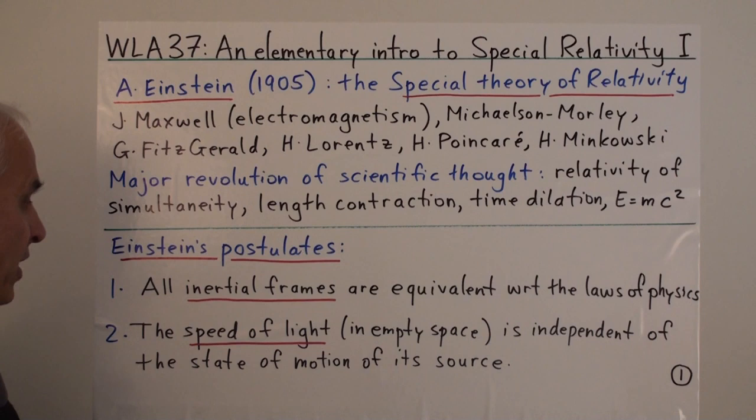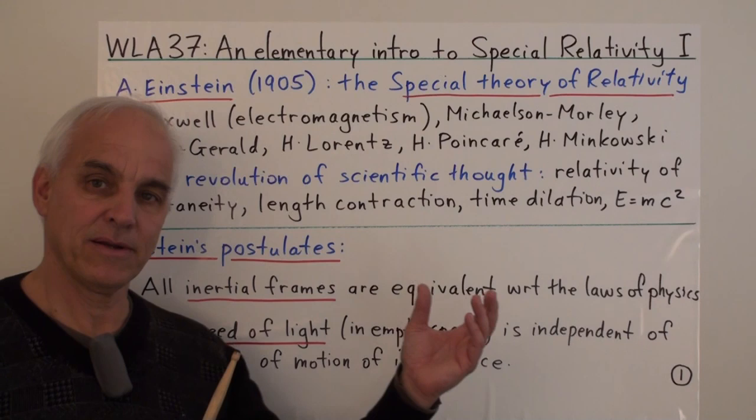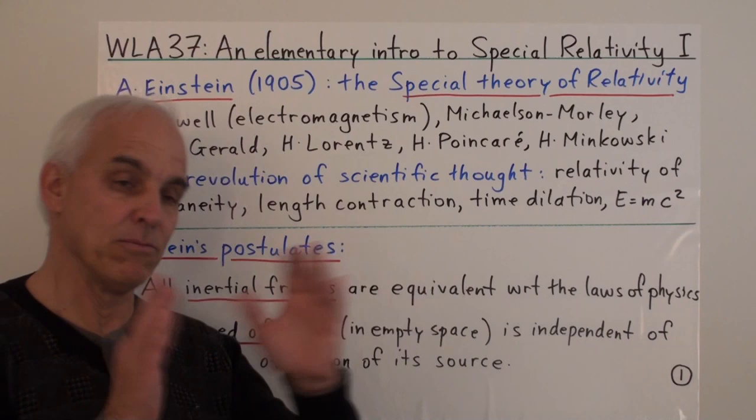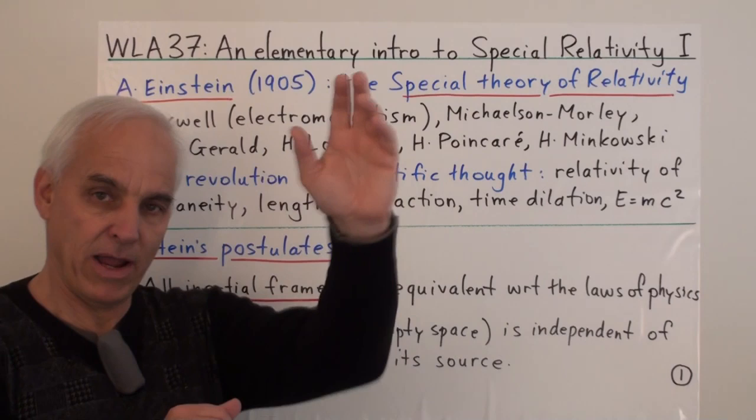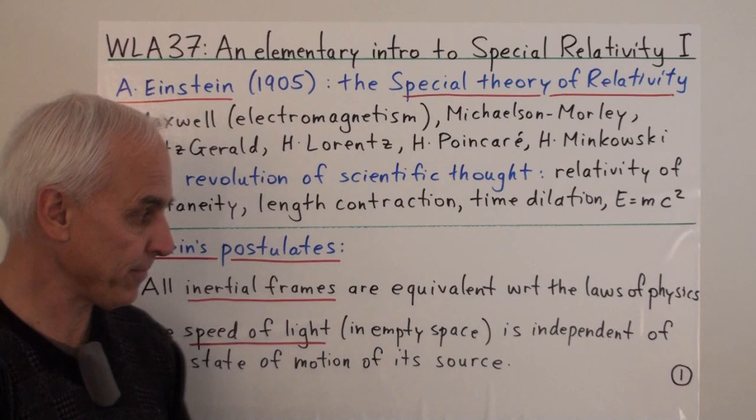So the first postulate is that all inertial frames are equivalent with respect to the laws of physics. So inertial frame is one that's not accelerating. But that can mean that it's moving at a constant velocity with respect to some other inertial frame. So we had this idea, perhaps best thought of in terms of things moving around in space, one thing drifting around in space, and then some other object drifting around with some velocity with respect to the first, that it's impossible to say that one of these is stationary and the other one's moving. The laws of physics don't really distinguish between these two inertial frames.